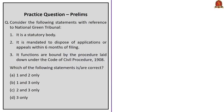Practice question 1: Consider the following statements with reference to the National Green Tribunal. Statement 1: It is a statutory body. Statement 2: It is mandated to dispose applications or appeals within 6 months of filing. Statement 3: Its functions are bound by the procedure laid down under the Code of Civil Procedure 1908. Statements 1 and 2 are correct. Statement 3 is incorrect because NGT is not bound by the CPC 1908 — it is guided by principles of natural justice. Therefore, the correct answer is Option A: 1 and 2 only.